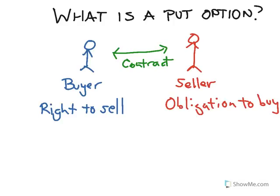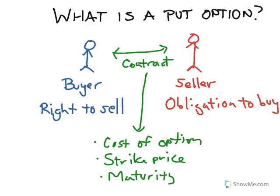The buyer of a put gets the right to sell and the seller has an obligation to buy. The buyer has the right to sell to the seller anytime until the end of the contract. The put contract has three main parts: the cost of the option, which goes to the seller, the strike price, and the maturity, or the length of time that option is good for.